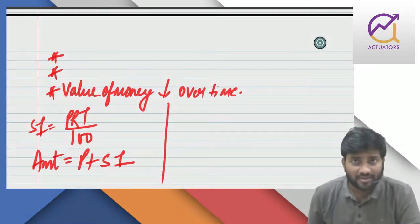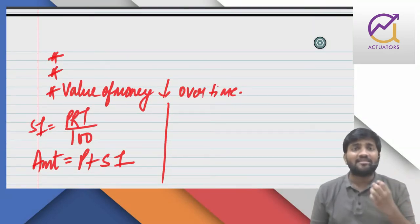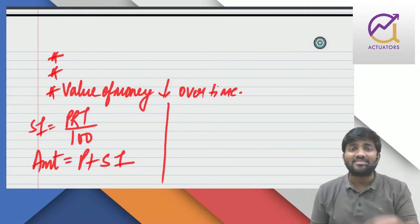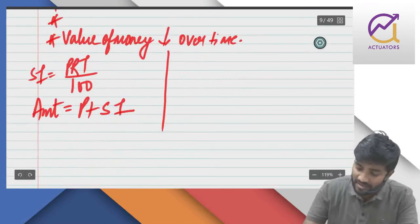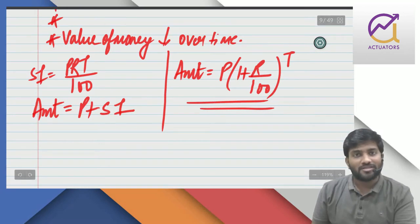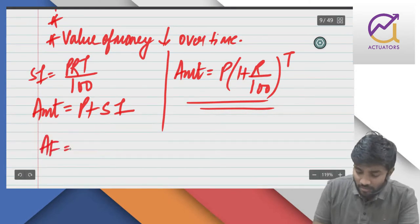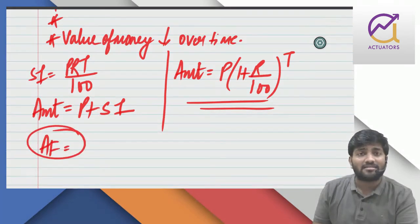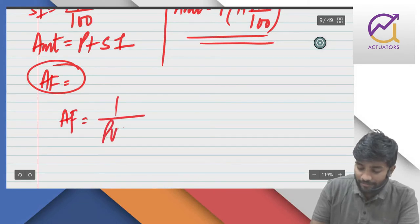Next, we did compound interest, in which we get interest on interest. In simple interest, interest is received or paid only on the principal amount. But in compound interest, we get interest on interest — there is compounding of interest. The formula for compound interest is: Amount equals Principal times (1 + R/100) to the power T. We also did the accumulation factor — how many times my fund has grown.